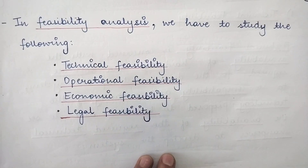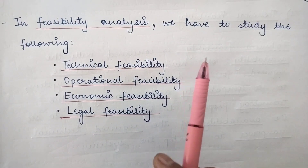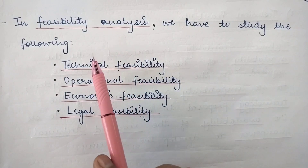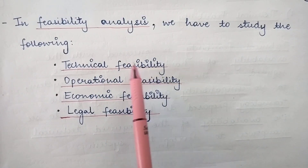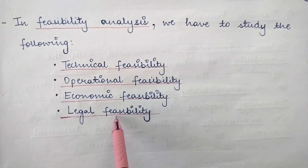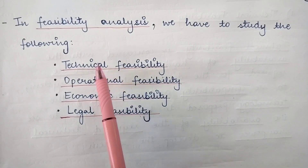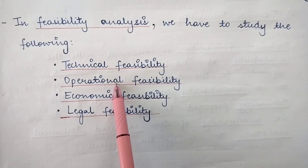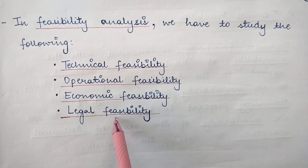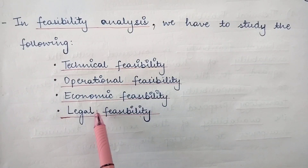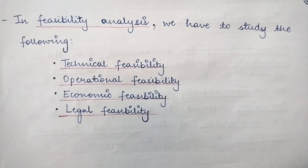In feasibility analysis, we study the following types of feasibility. There are four major types: technical feasibility, operational feasibility, economic feasibility, and legal feasibility. Today we are going to study technical feasibility, and in the rest of the three upcoming videos, we will study operational, economic, and legal feasibility one by one.